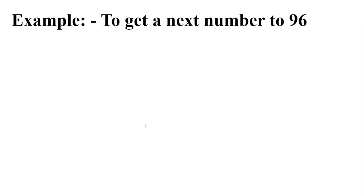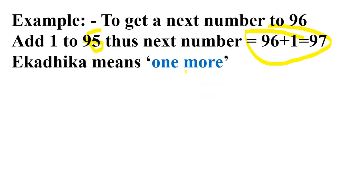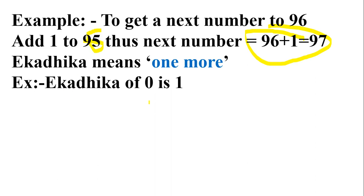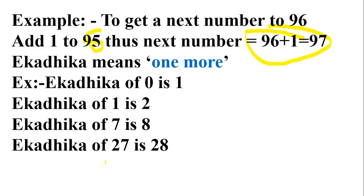This is what this sutra says — it is used to get the next number to a given number. For example, to get the next number of 96, it is simply 97 — you just add one. Ek Adhiken means one more: if you have 1 it will be 2, if you have 100 it will be 101. Ek Adhika of 0 is 1, of 1 is 2, of 7 is 8, of 27 is 28. Very simple — this sutra is completed here.